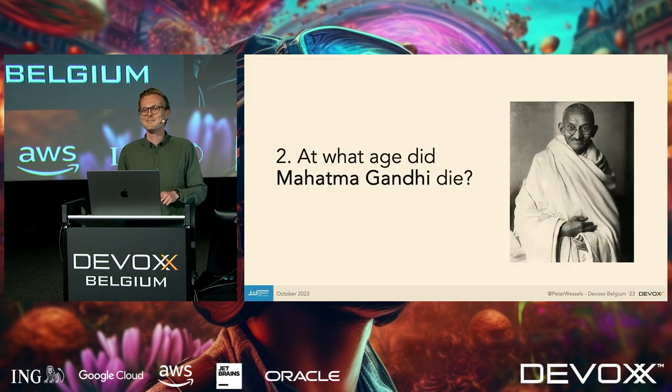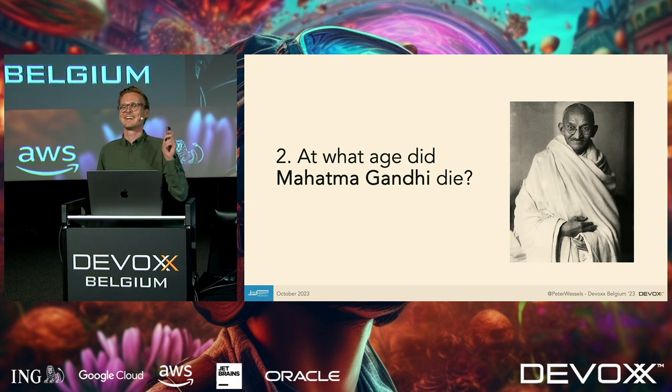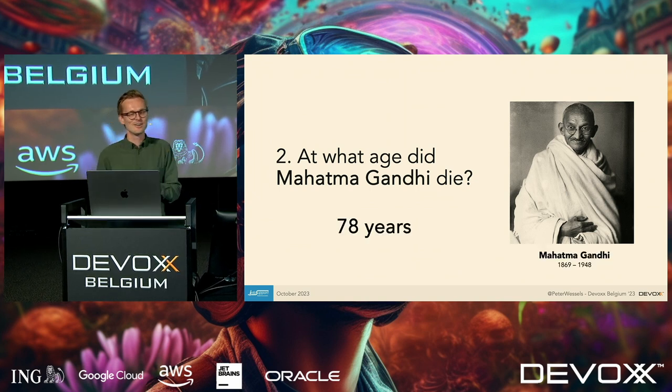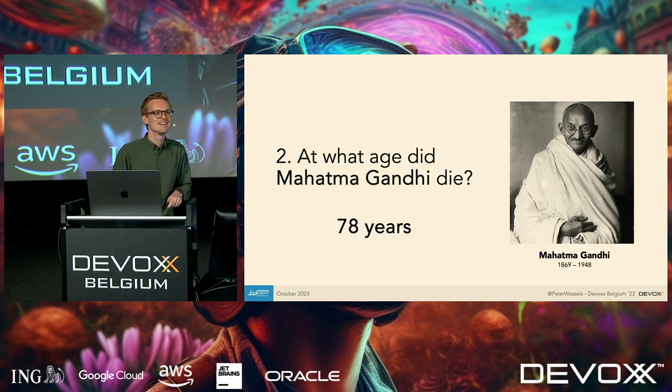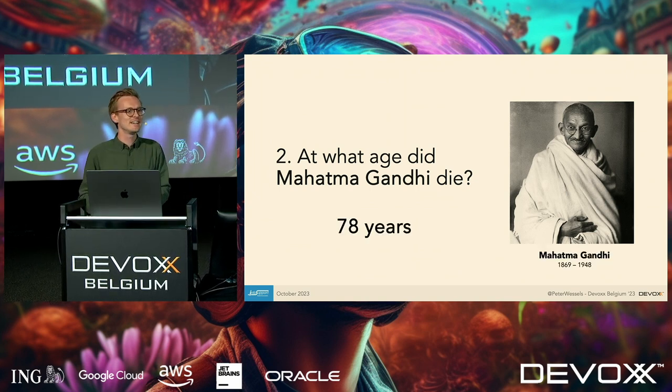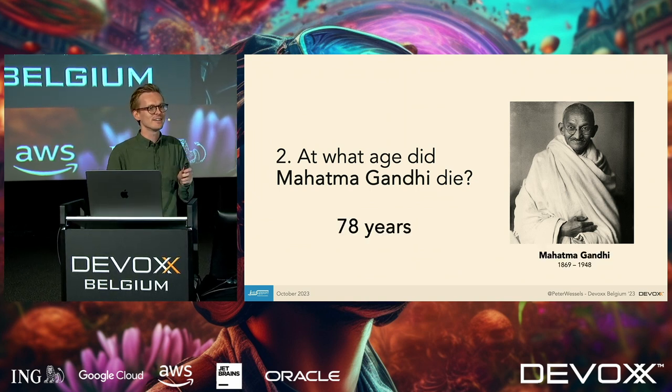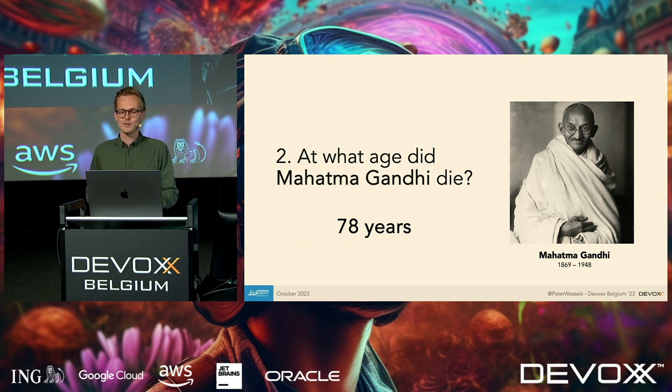At what age did Mahatma Gandhi actually die? He was 78 years old. So Group B was actually quite close.